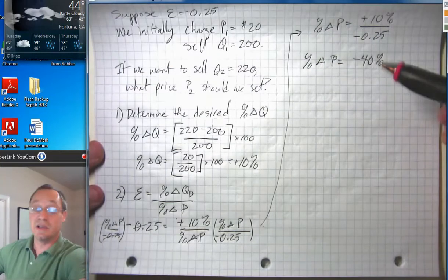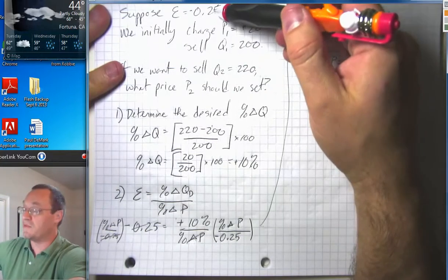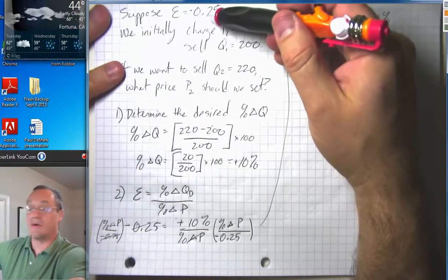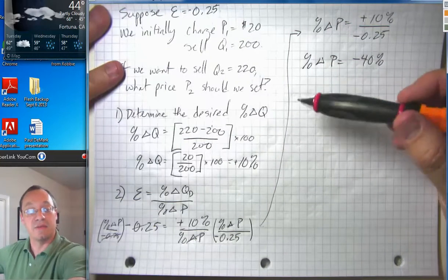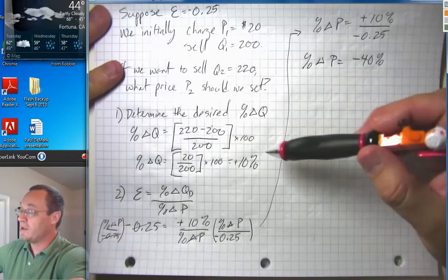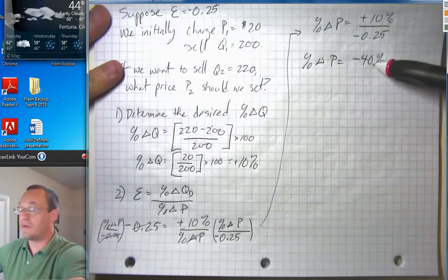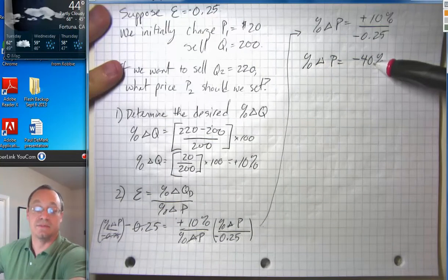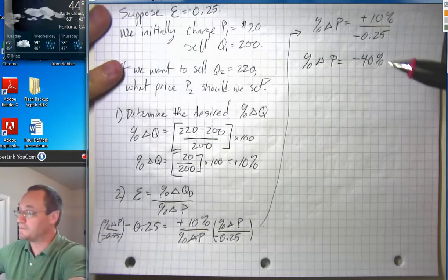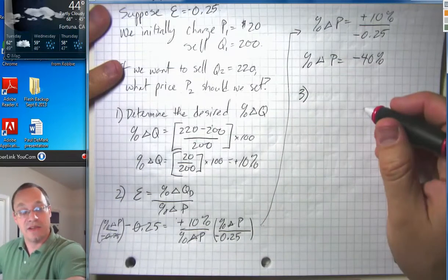So in this particular case, we have inelastic demand. Remember that if elasticity is between zero and negative one, that means we have inelastic demand. Consumers are not very price responsive. To achieve a 10 percent increase in sales, we have to cut prices by 40 percent, which sounds like it's probably a pretty bad idea. But let's go ahead and see what that new price would be.